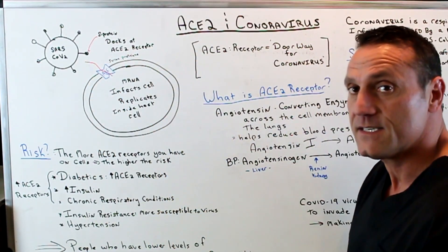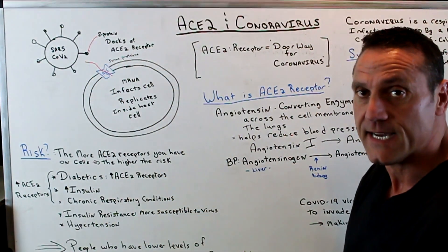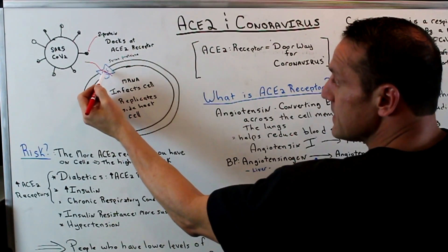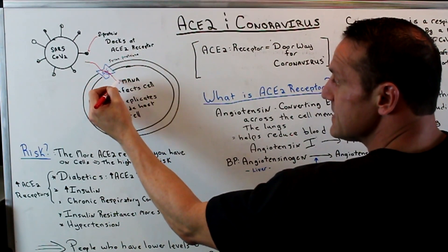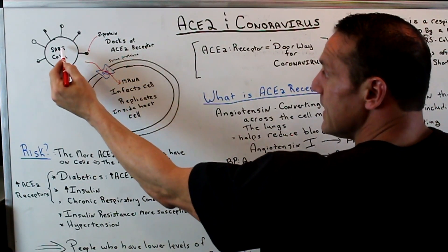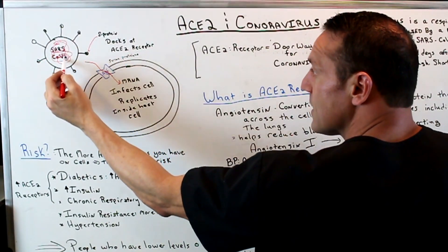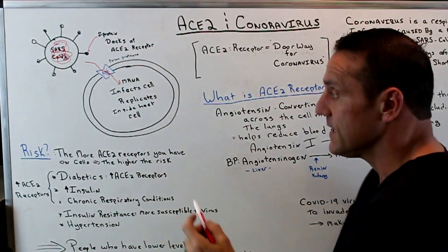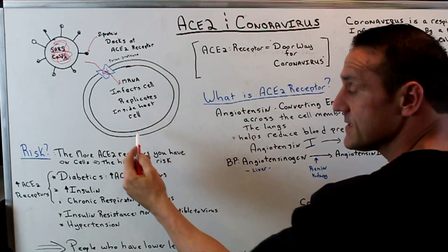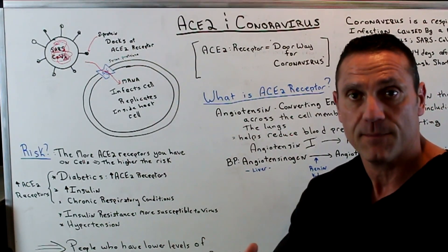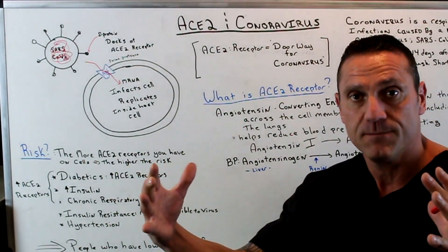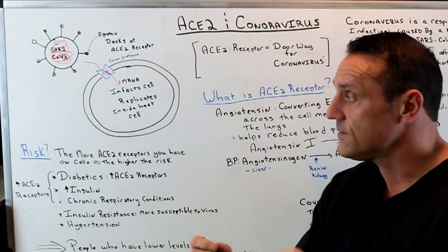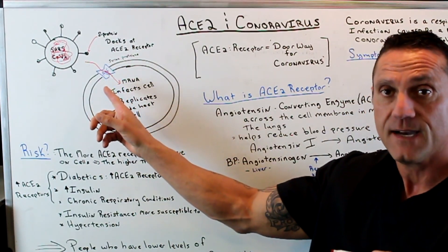The receptor has a serine protease, which allows the coronavirus to get into the cell and have its messenger RNA replicate inside the host cell. And it just replicates and gets worse and worse. It's all due to the ACE2 receptor.